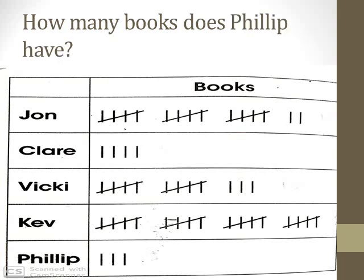The next question is: how many books does Philip have? Going to Philip's row — there are three vertical lines, that means Philip has three books.